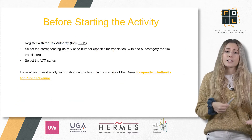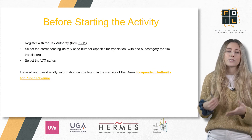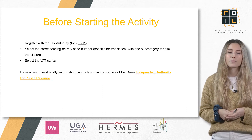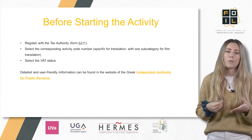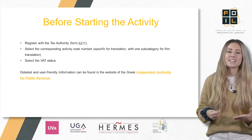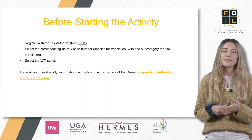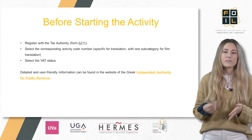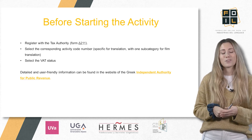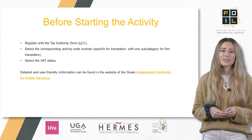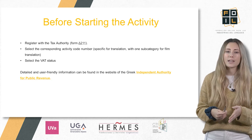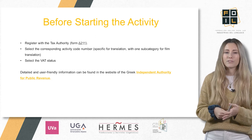Before starting an activity in Greece, you must register with the tax authority by completing a specific form. This can also be done online. You have to select the corresponding activity code number, which is specific for translation, with one subcategory for financial translation. You will also have to select the VAT status. Detailed and user-friendly information can be found on the website of the Greek Independent Authority for Public Revenue.